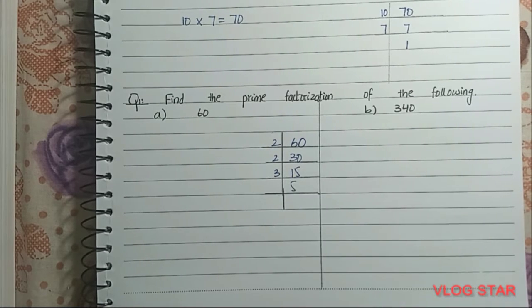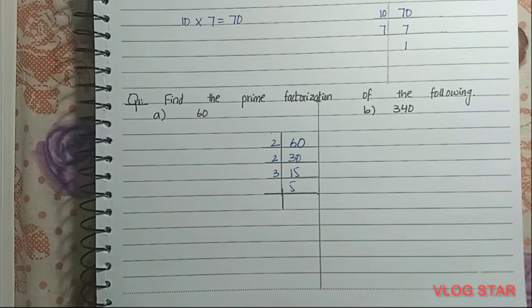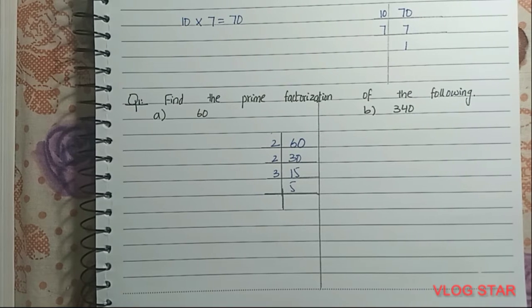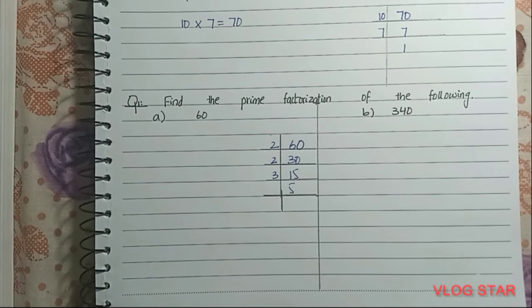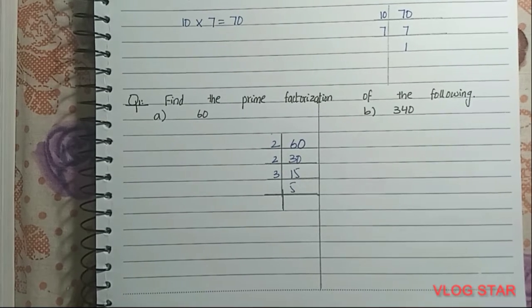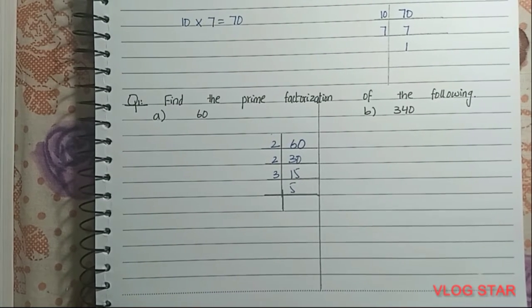15 is not divisible by 2. Let's try it with 3, and yeah, we got our answer: 3 × 5 = 15. And 5 is again a prime factor, so we write 5 ÷ 5 = 1.